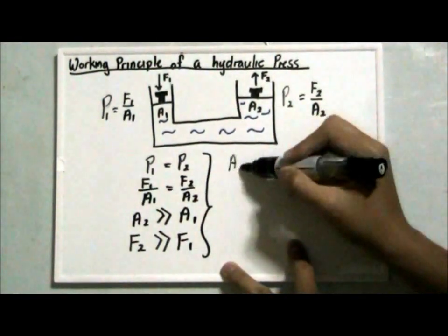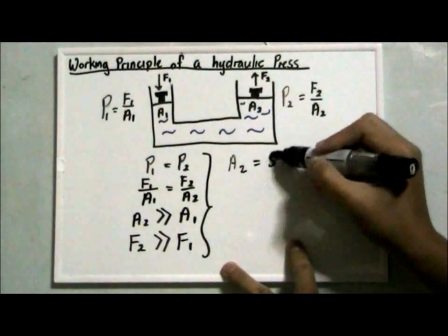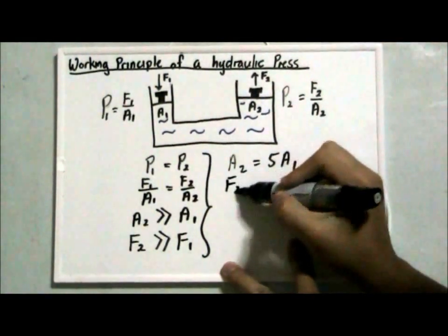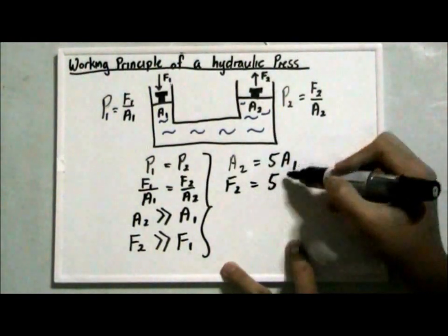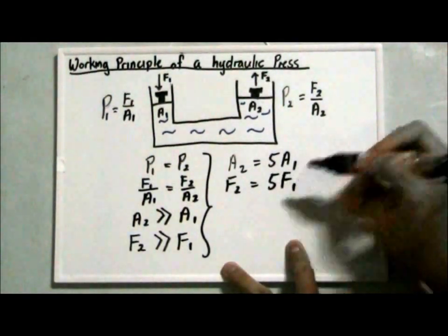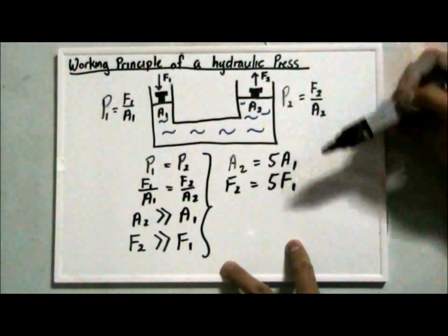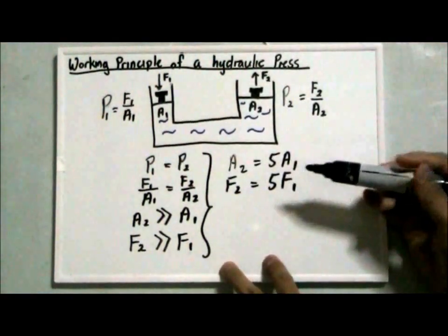If let's say area 2 is actually 5 times bigger than area 1, the force 2 will also be 5 times bigger than force 1. So this hydraulic press is basically a force multiplying machine.